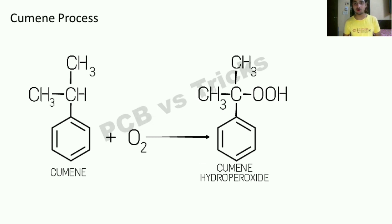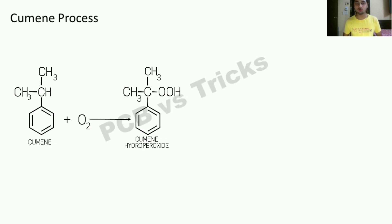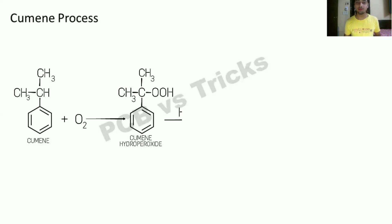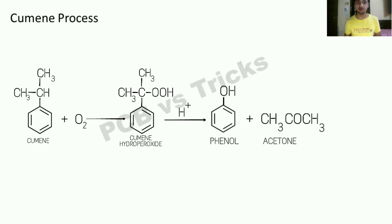Cumene hydroperoxide is so important that questions on it have already appeared in exams. In the presence of acid, we get the O-H group and phenol. The other products are side products. What we also get as a byproduct is acetone. The reaction of the Cumene process is used to create phenol in very large quantities.